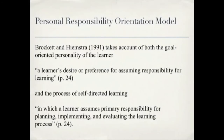The Personal Responsibility Orientation model, or PRO, proposed by Brockett and Hiemstra, takes account of both the goal-oriented personality of the learner — 'a learner's desire or preference for assuming responsibility for learning' — and the process of self-directed learning, 'in which a learner assumes primary responsibility for planning, implementing, and evaluating the learning process.' Their comments about the process of self-directed learning are similar to what Knowles and Tough described, but as Merriam et al. note, the notion of personal responsibility is 'the point of departure for understanding their concept of self-directed learning.' The PRO model is grounded in the idea that humans strive to achieve their potential, and it also recognizes the importance of contextual factors in self-directed learning.